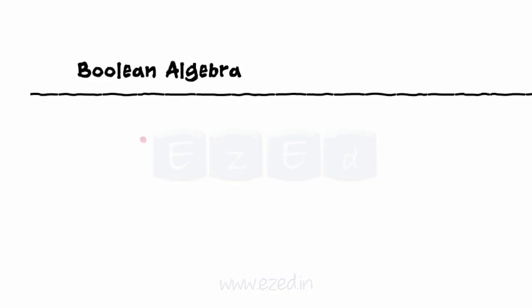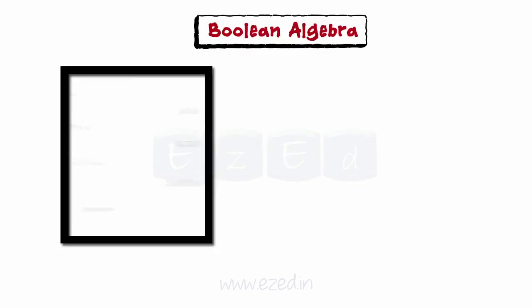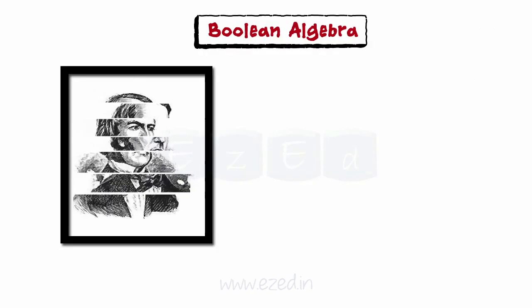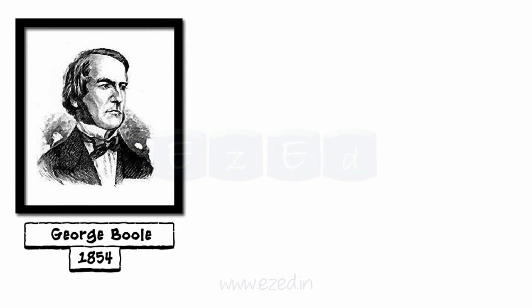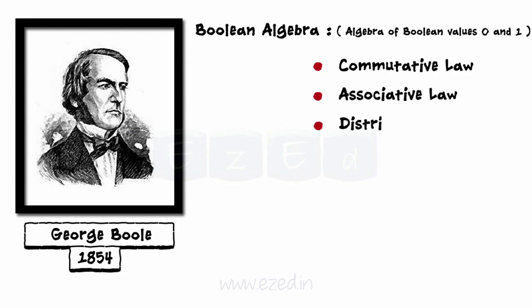In this Easy Ed video lecture, we will learn Boolean algebra, De Morgan's law, and flip-flops. Boolean algebra was developed by George Boole in 1854. It is the algebra of Boolean values 0 and 1, which explains the algebraic laws like commutative law, associative law, distributive law, and other laws.